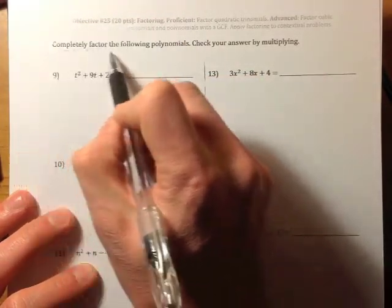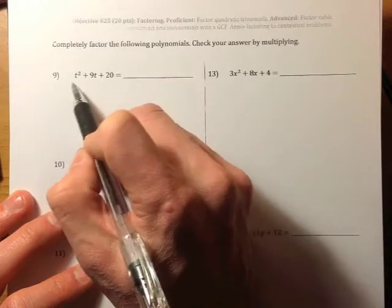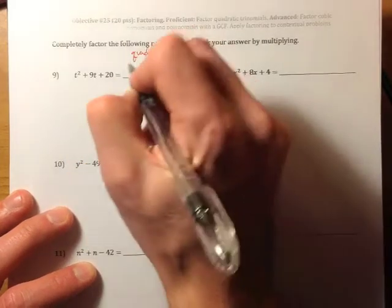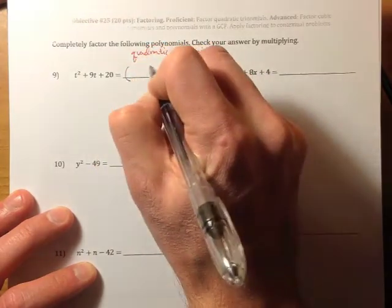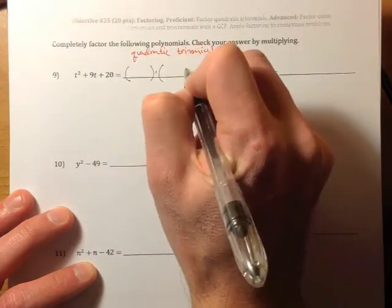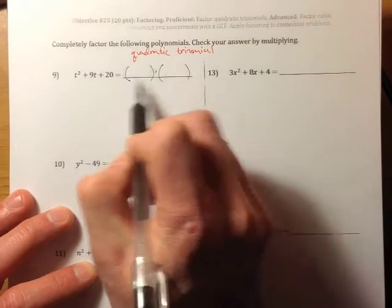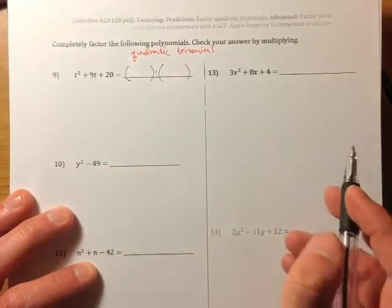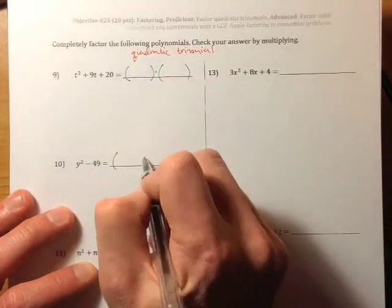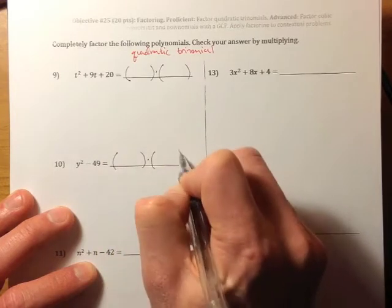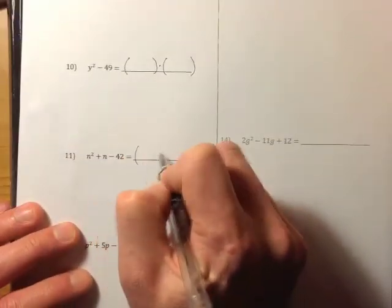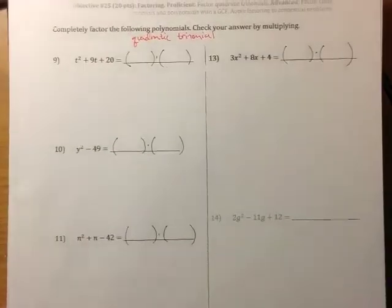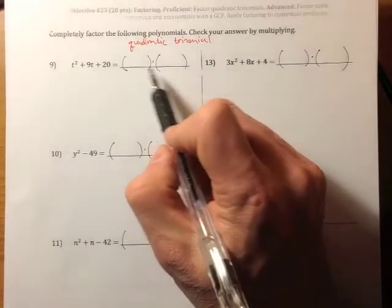We are asked to completely factor this polynomial. Now, when we are asked to factor something, the result is going to look like two sets of parentheses multiplied together. That's how all of these are going to look. So I'm just going to go ahead and put them in. Now the question becomes: what do we put into the parentheses?